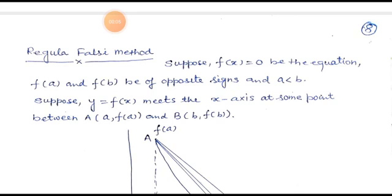This is J.B.N. Dr. Brijraish Singh Chauhan, Associate Professor, Jyoti Vidya Peet Women's University, Jaipur. The program is MSc Physics second semester, and the course is Numerical Computation.